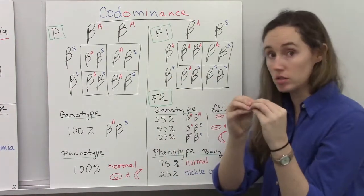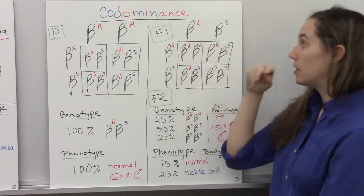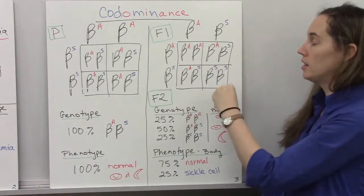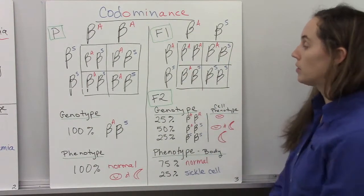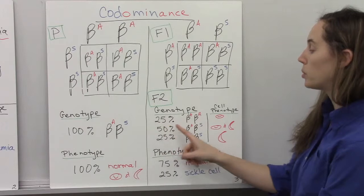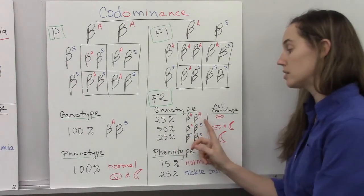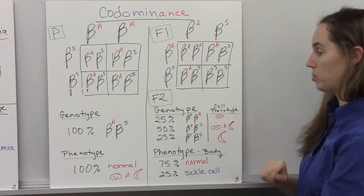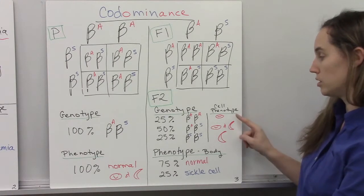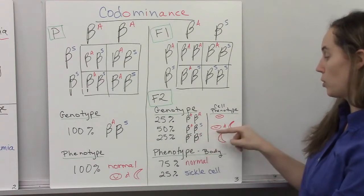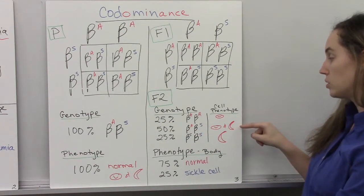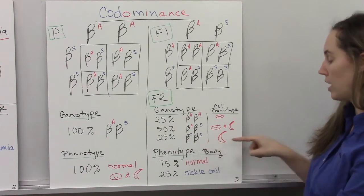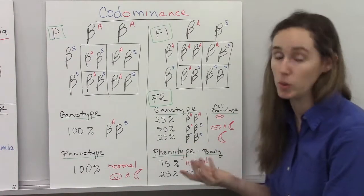Now, if you cross two carriers, two heterozygotes, and they mate, their offspring have a 25% chance of being homozygous for normal. And they will all have the regular normal red blood cells. 50% will be heterozygous, they'll produce both phenotypes cellularly. And 25% will be homozygous for sickle cell and will have the sickle shaped malformed cells.